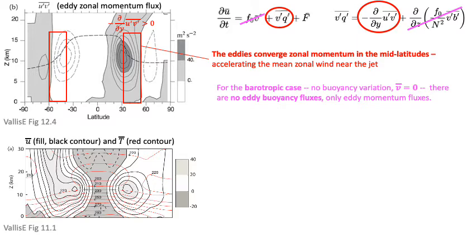For the barotropic case, the convergence of eddy momentum acts to accelerate the mean zonal wind near the jet. You can align this with the plot of the zonal mean zonal wind — the black contours — which aligns well with where the actual mean zonal jet is throughout the troposphere in the middle latitudes. On average, you have westerly flow in the middle latitudes throughout the depth of the troposphere, including all the way down to the surface, and this is driven by the convergence of zonal momentum in the middle latitudes.